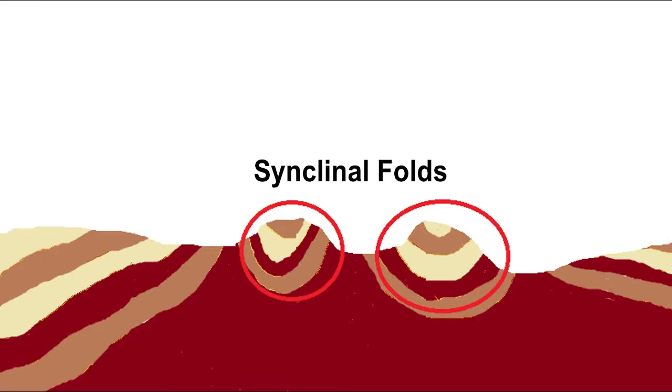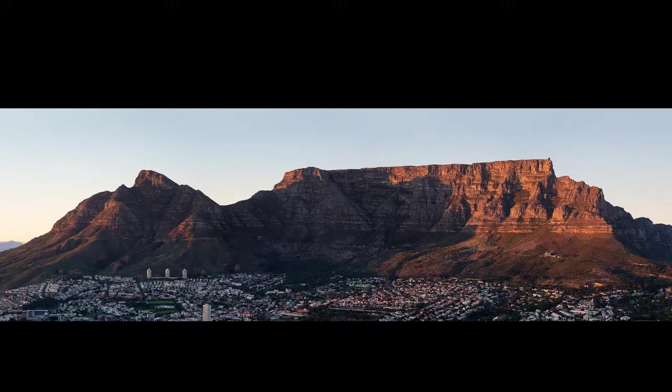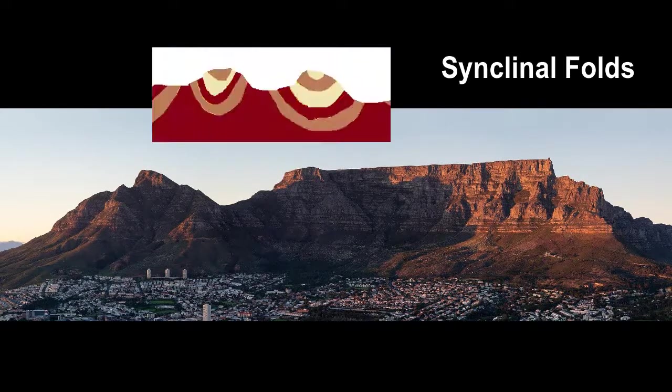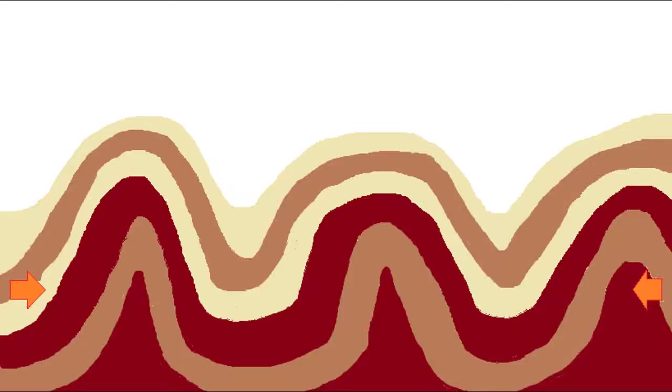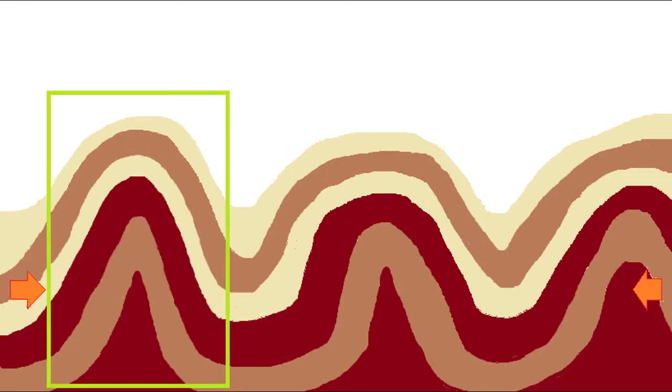We refer to those as synclinal folds. Table Mountain is an example of a synclinal fold. The top of Table Mountain and Devil's Peak were in the synclinal region of the fold mountains. Now we're going to look at the different types of folds you can get.